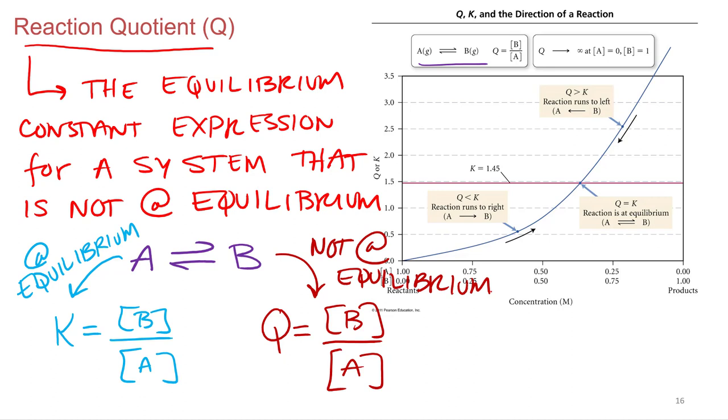Eventually, if this is a reversible system, eventually it would come back down to equilibrium. And you can tell which way it is by referencing Q to K.